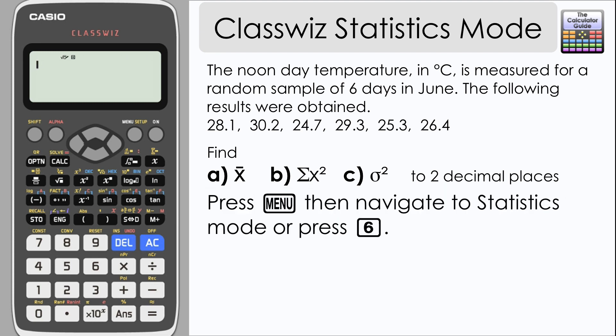Start by pressing menu and then navigate to statistics mode or you can press 6 as a shortcut. We then need to select 1 for one variable.